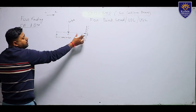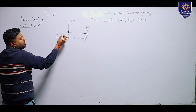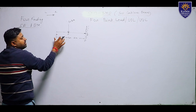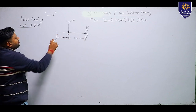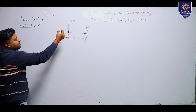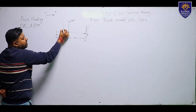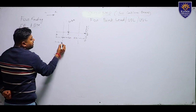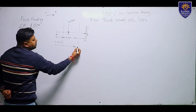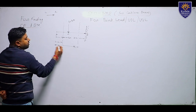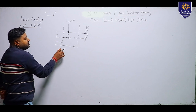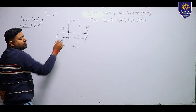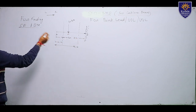We consider beam AB divided into two parts: AC and CB. We calculate each part separately for shear force and bending moment. We draw a section 1-1 at distance x1 and section 2-2 at distance x2 from point A. These sections allow us to write equations for each portion.